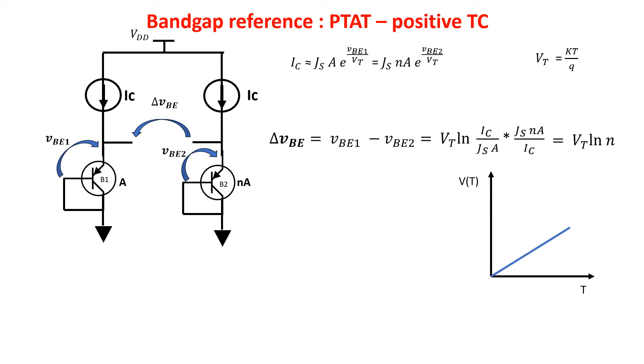The variation of delta VBE with temperature is this one here, which is constant. So in this case we have a very good PTAT with a positive and linear relationship with temperature.